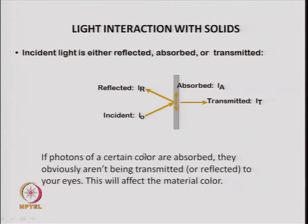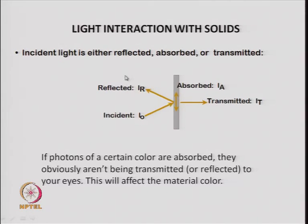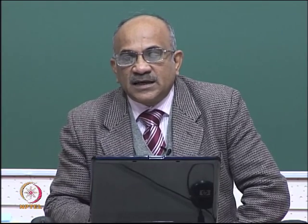If certain photons of a certain color are absorbed, they will not be seen in the transmitted beam or the reflected beam, and this will affect the color of the material. The color you observe depends on the beam reaching your eyes. If something is absorbed you will not see that exact wavelength from the incident beam; you see the resultant wavelength minus the absorbed wavelength, so you see a different color. This is what happens when light interacts with solids — reflected or transmitted light differs from incident light because some radiation has been lost due to absorption.